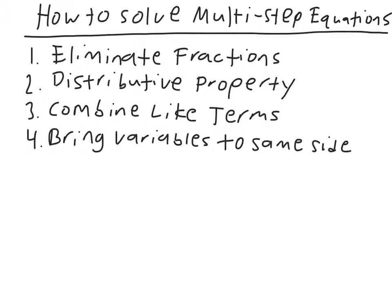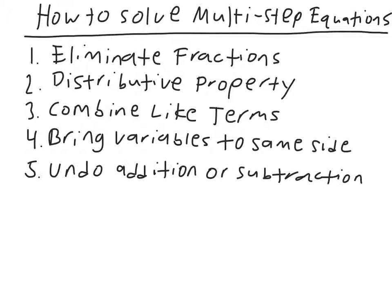The next step is, if you have variables on both sides of the equal sign, you have to bring the variables to the other side. You'll do that by doing the opposite — if it's a positive variable, you'll subtract it; if it's a negative variable, you'll add it. After step four, you should be down to a two-step equation, and then you do the steps we did last time.